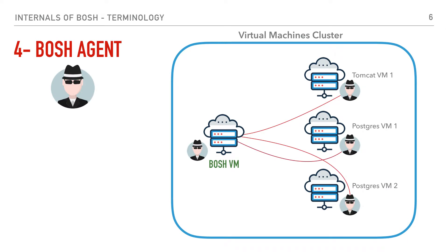The fourth term we're going to cover is the agent, also called the BOSH agent. It's the process that runs continuously on each VM that BOSH deploys. The agent executes tasks in response to the messages it receives from the BOSH director. So let's say we tell the BOSH director using the CLI that we want three VMs — Tomcat, Postgres, and two Postgres instances. Whenever BOSH creates those VMs from the stemcell, a process called the BOSH agent will start up on boot and call back home, which is the BOSH director.